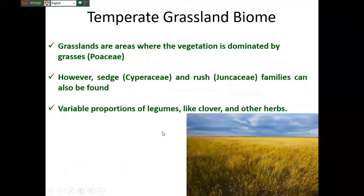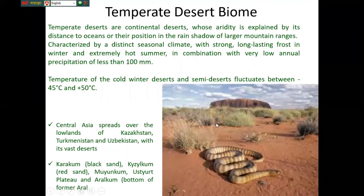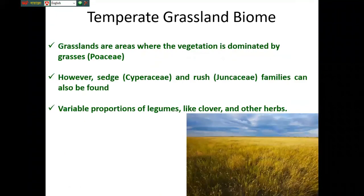Next, the temperate grassland biome. This is occupied with grassland. The grasslands are areas where the vegetation is dominated by grasses of the Poaceae family. Cyperaceae and Juncaceae families can also be found. There is a variable proportion of legumes like clover and other herbs also available there. This is the grassland biome.